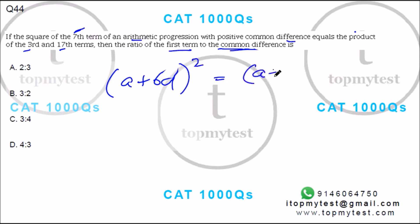That's (a + 2d) times (a + 16d), which gives you a² + 18ad + 32d².